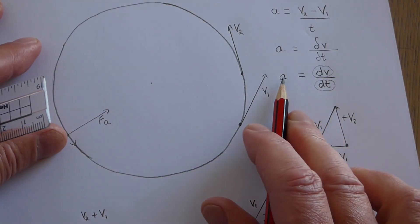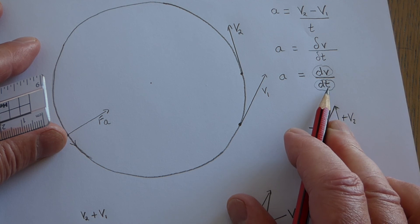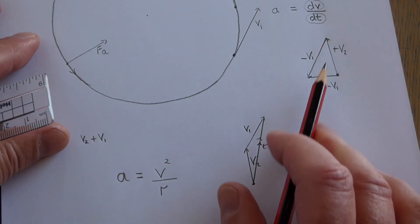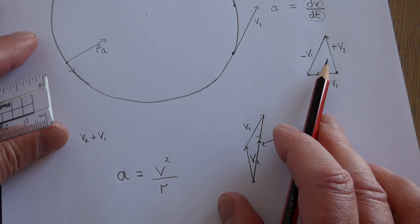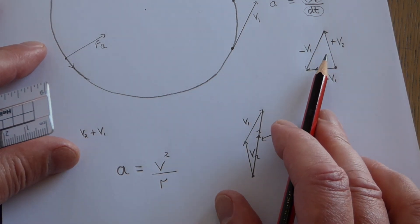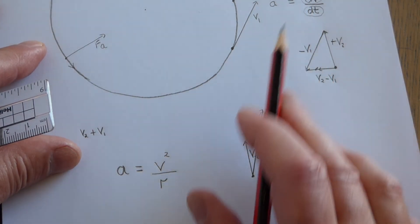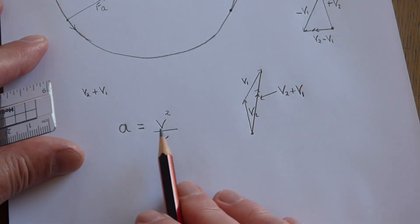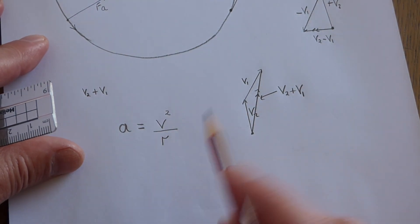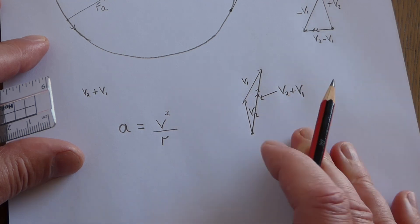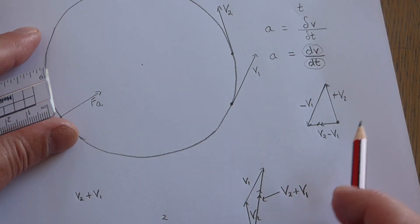That formula is the result of taking a = dv/dt, the rate of change of velocity, using vector diagrams to do the analysis and carrying out the differentiation process. The process of getting that formula you don't need to know, although you do need to know how to subtract vectors.